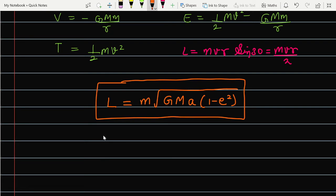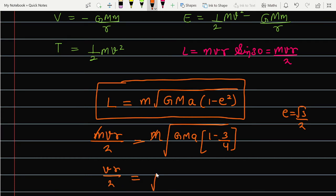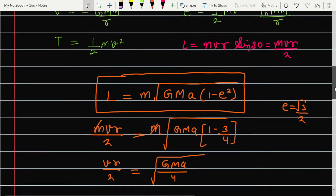So here we can equate the angular momentum value, which we have calculated from here - mvr by 2. This is the actual angular momentum at that instant, which is equal to the elliptical orbit momentum. So we can write mvr by 2 equals m root GMa(1 minus e square). Eccentricity you have given as root 3 by 2, so e square is 3 by 4. So here m will get cancelled out, and vr by 2 equals root GMa by 4, because here there will be 1 by 4 remaining.